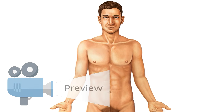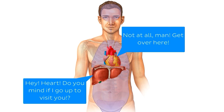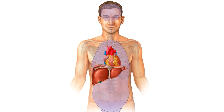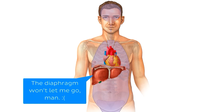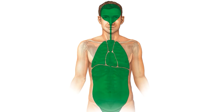If there's one thing we can say with certainty about our bodies, it's that they're both organised and efficient in their layout. Almost every structure in our body, big or small, is compartmentalised in one way or another to ensure that everything stays where it needs to be. One way which our body achieves this is by the presence of defined spaces, or cavities.